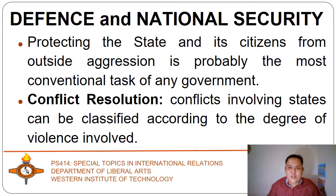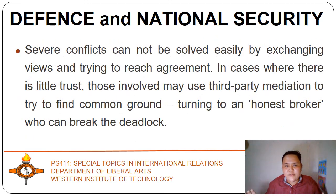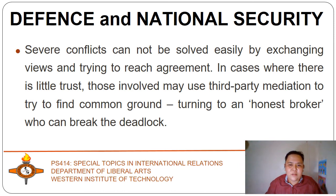Protecting the state and its citizens from outside aggression is probably the most conventional task of any government. In conflict resolution, conflicts involving states can be classified according to the degree of violence involved. Severe conflicts cannot be solved easily by exchanging views and trying to reach agreement. In cases where there is little trust, those involved may use third-party mediation or conciliation to find common ground. Conflicting states may bring their case to the Security Council, the International Court of Justice, or some other authoritative international body.